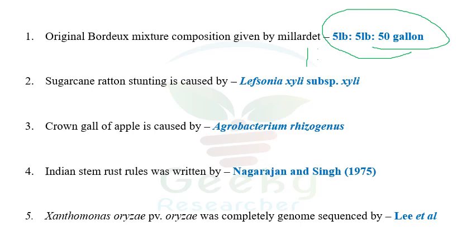The 1:1:100 composition is what we have seen in UG and PG. In the exam options, they never gave the option 1:1:100. If you see 5 lb, 1 lb equals almost 0.4 to 0.45 kg. One gallon equals 3.7 liters of water. So 5 lb equals 2.2 kg and 50 gallons equals approximately 190 liters — almost equivalent to 1:1:100. But the answer given in the options is 5 lb of copper sulfate, 5 lb of lime, and 50 gallons of water.